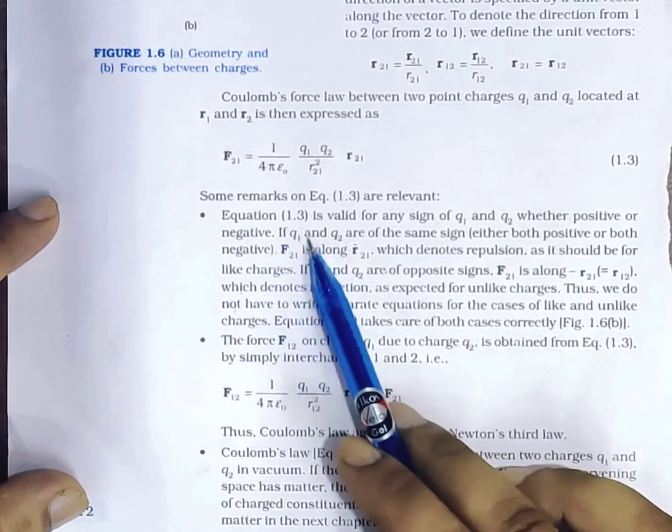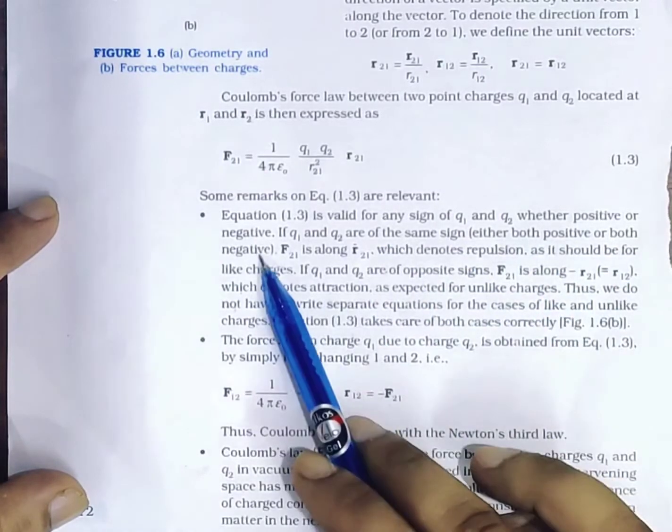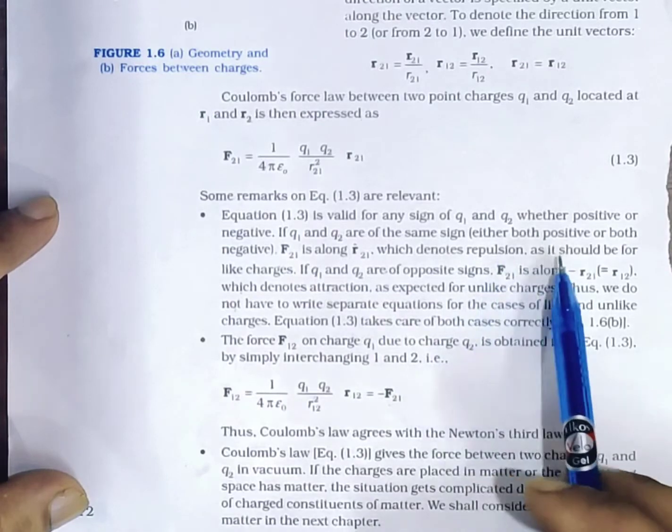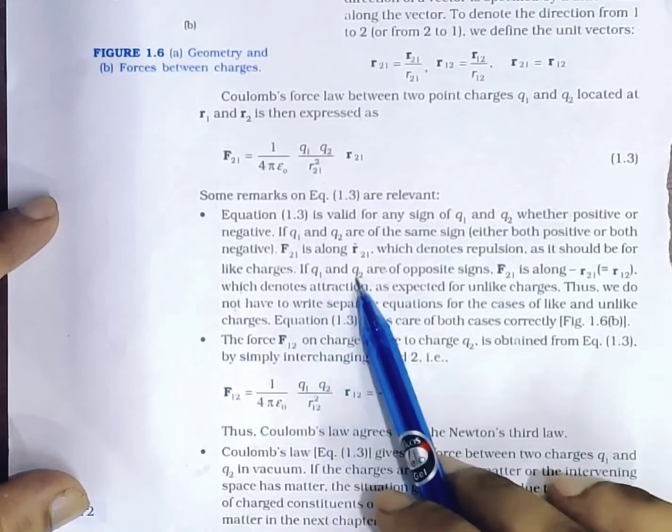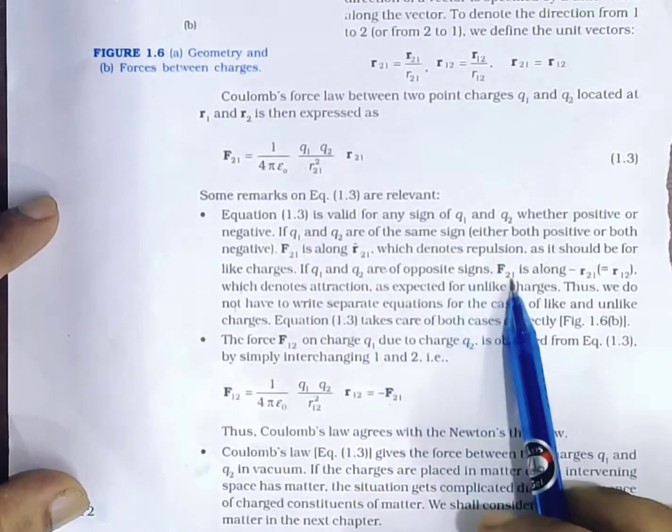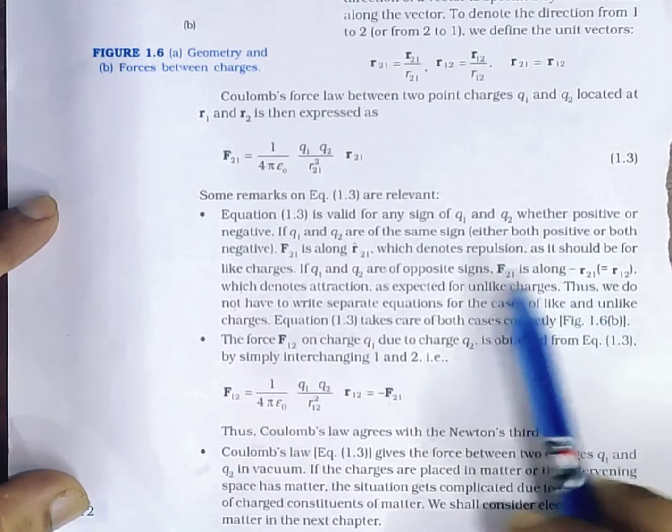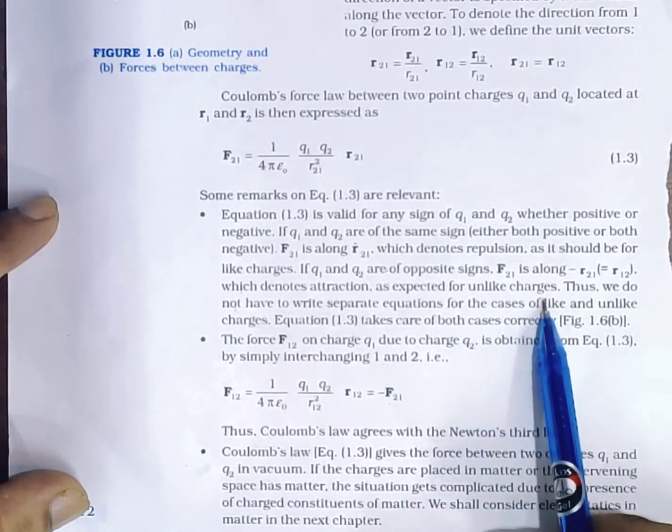If Q1 and Q2 are of the same sign, either both positive or both negative, F21 is along r̂21, which denotes repulsion as it should be for like charges. If Q1 and Q2 are of opposite signs, F21 is along negative r̂21, which denotes attraction as expected for unlike charges.